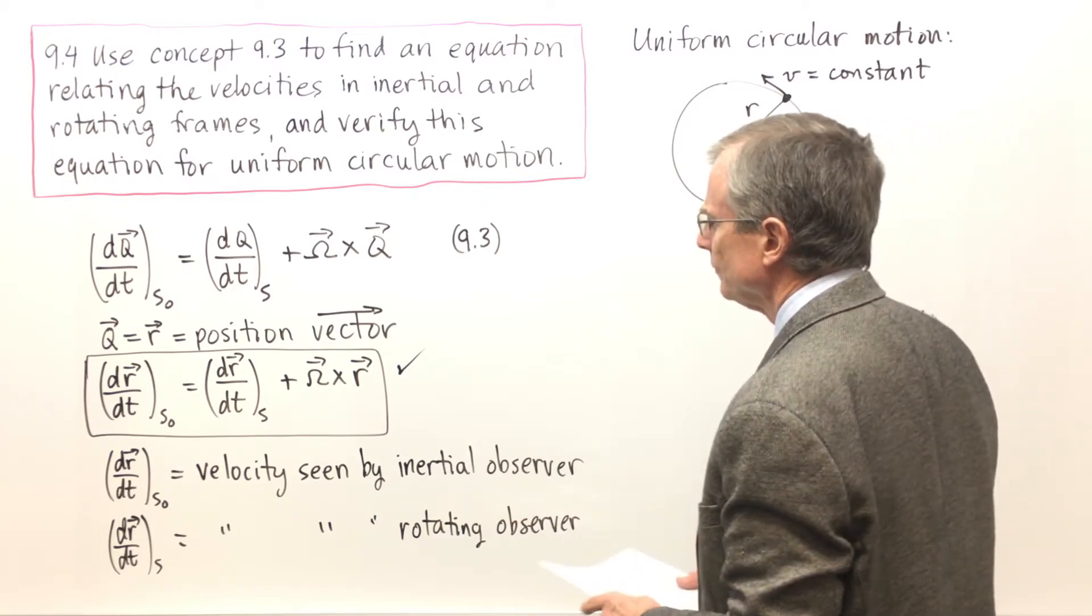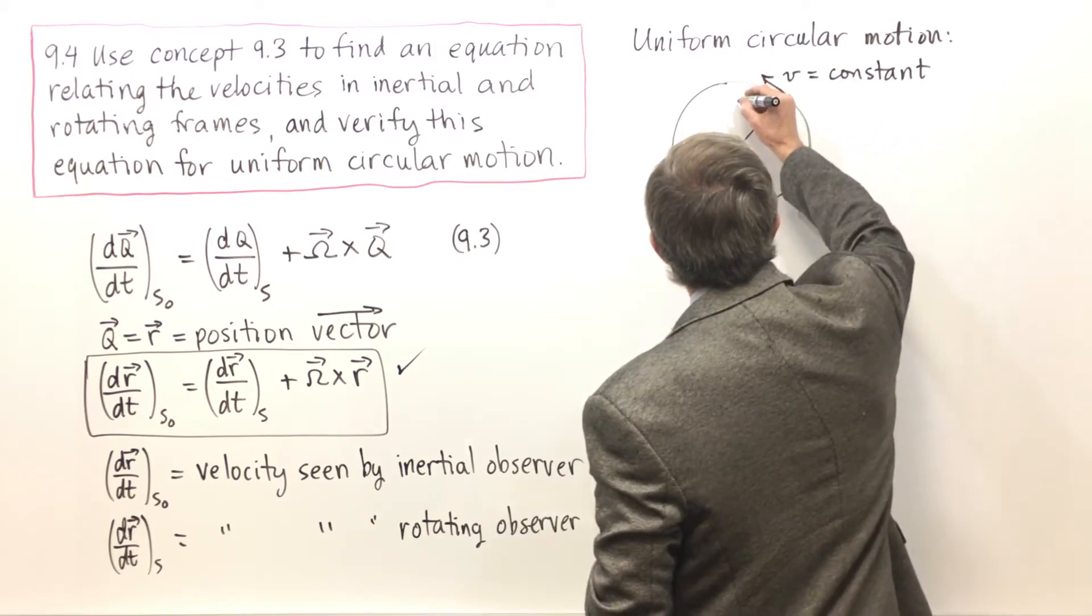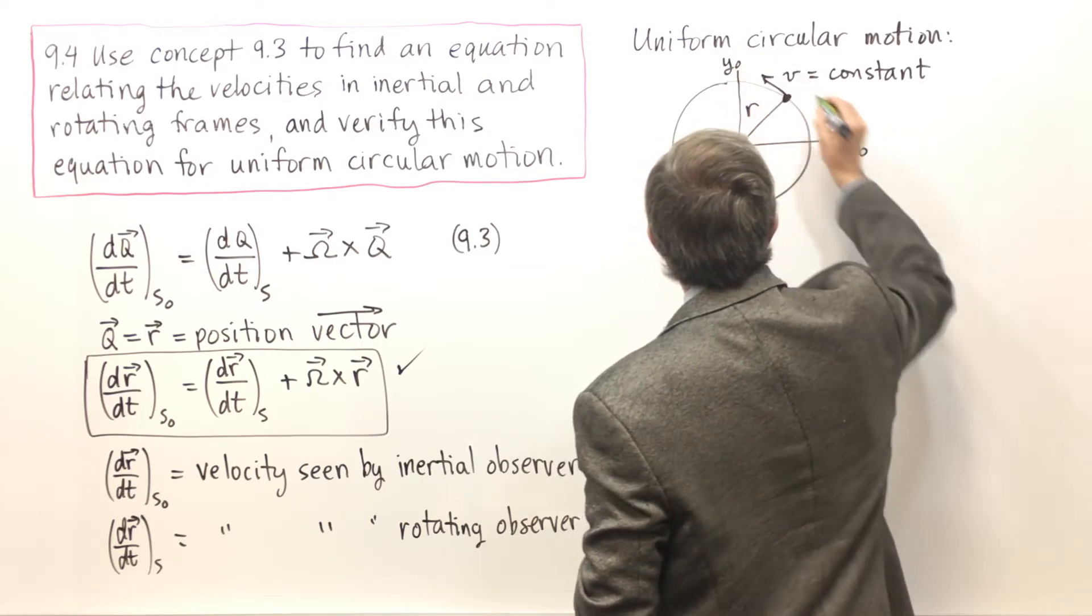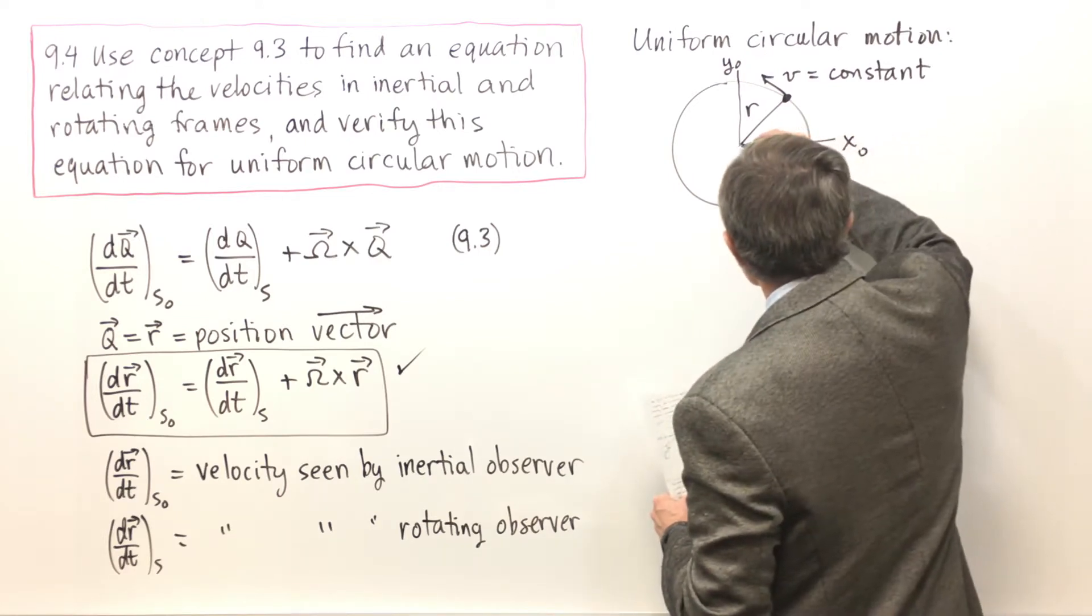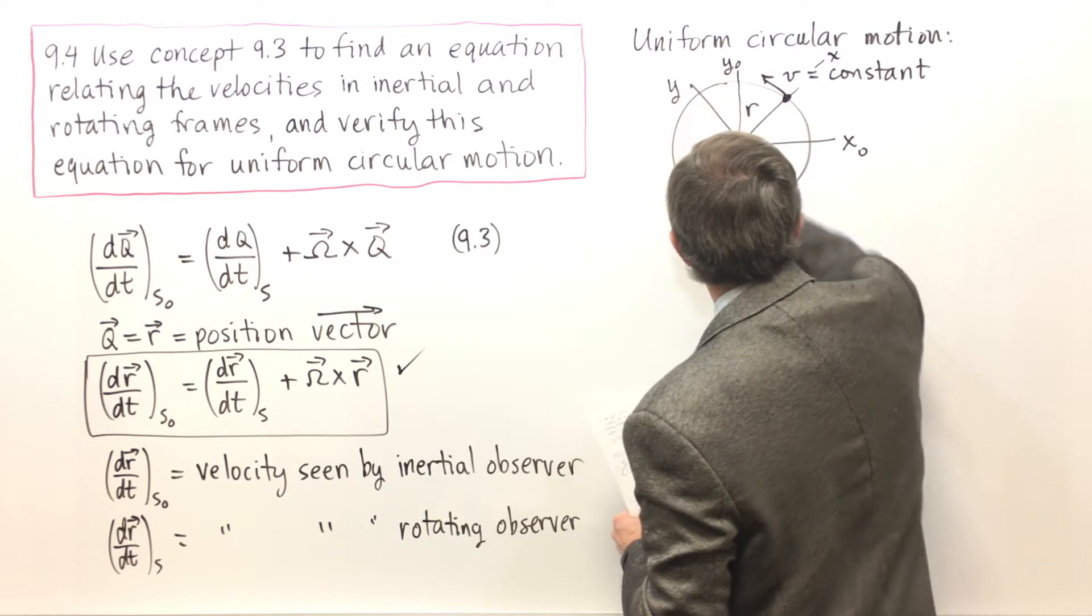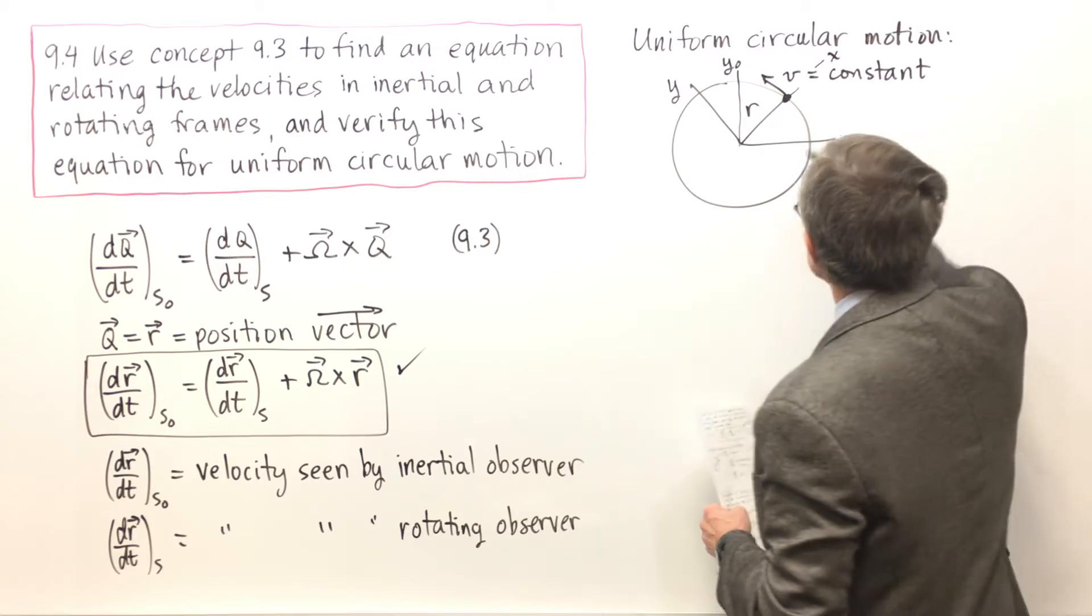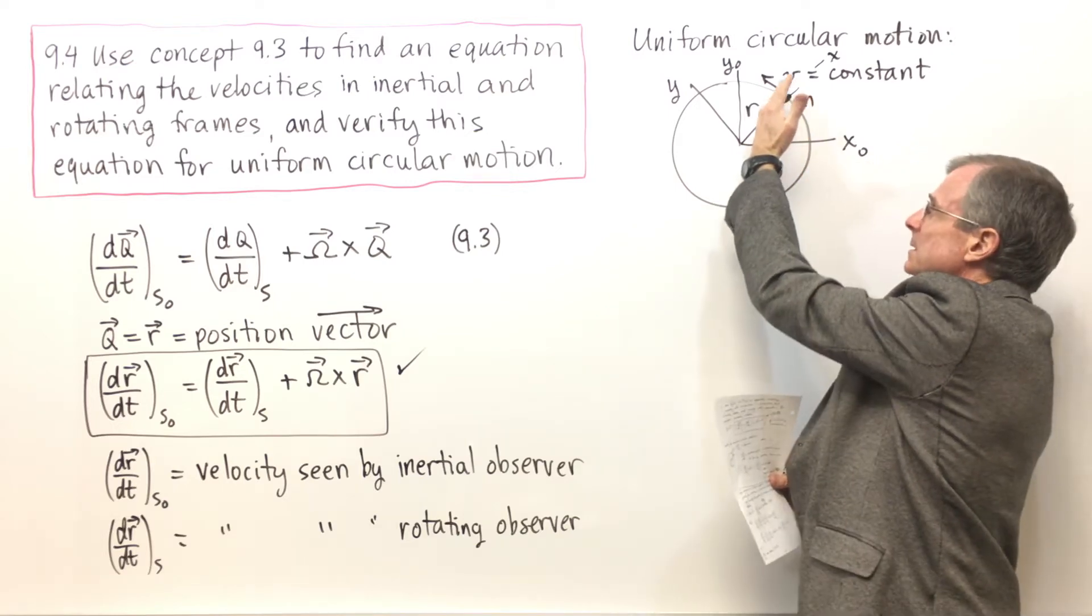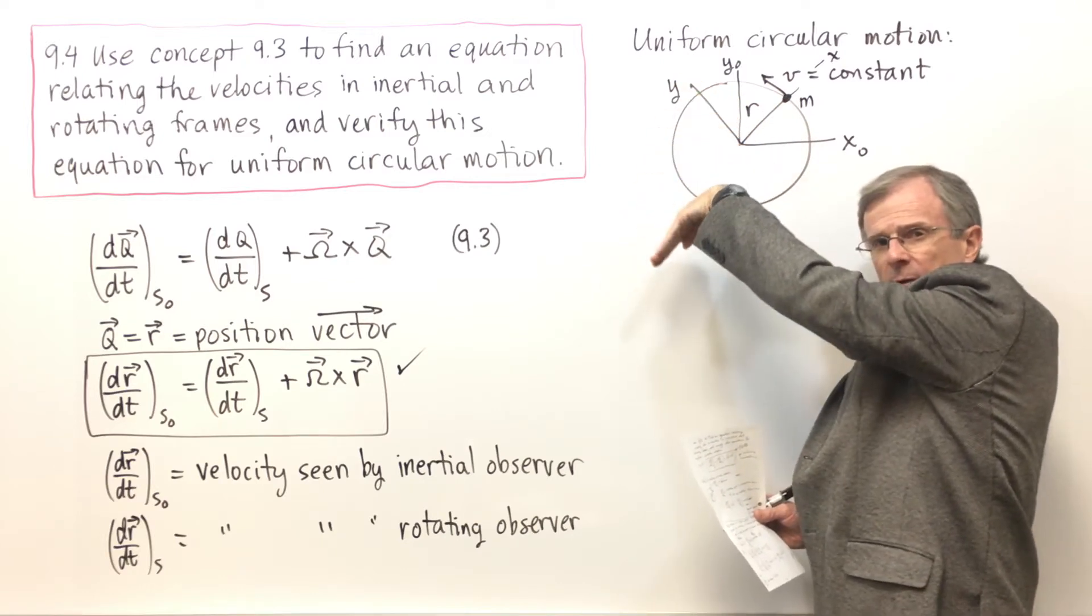We're going to think about two different frames. The frame x naught y naught, that's the inertial frame. And then we're going to also think about a frame where this x axis passes through the actual position of the mass m. So as that mass rotates around the circle, the x-axis is following it and the y-axis is always 90 degrees ahead of it.